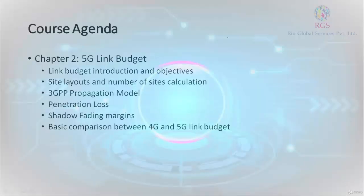Welcome to Chapter 2 called '5G Link Budget.' In this chapter we identify what exactly a link budget is, how a site layout can calculate the site area to be covered, whether it is a three-sector or four-sector site, the different 3GPP propagation models, different types of fading margins and propagation losses considered in our link budget, and finally we'll compare the 5G link budget with the 4G link budget. This is the agenda of Chapter 2.